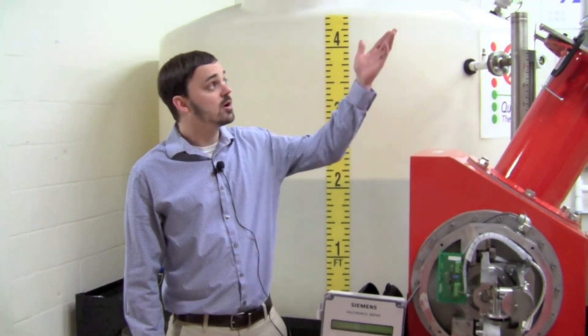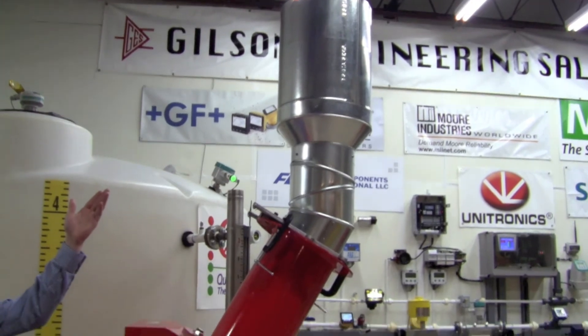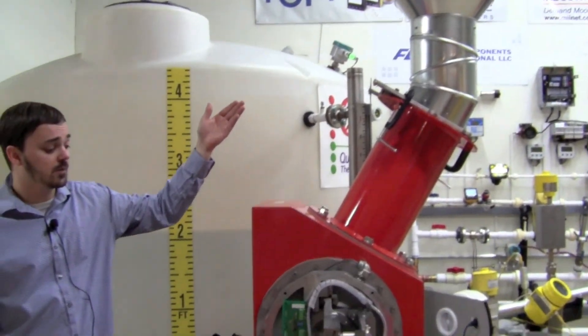Now that we have everything set up, we're going to demonstrate the flow meter in action. We have approximately 50 pounds of plastic pellets in the hopper above. I'm going to pull this knife gate and then we're going to watch it flow.